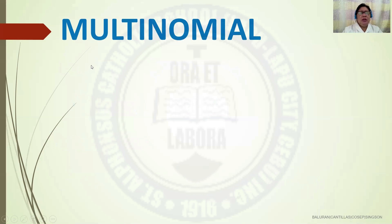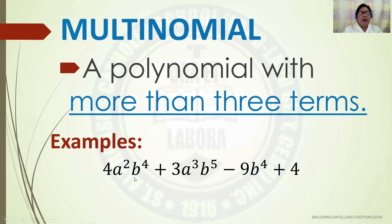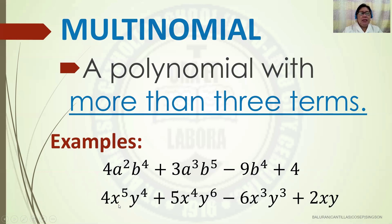Another classification is called multinomial. It is a polynomial with more than three terms. Examples: 4a squared b raised to exponent 4 plus 3a cubed b raised to exponent 5 minus 9b raised to exponent 4 plus 4 — counting the terms: 1, 2, 3, 4 — so it is a multinomial. Another example: 4x exponent 5 y exponent 4 plus 5x raised to exponent 4 y raised to exponent 6 minus 6x cubed y cubed plus 2xy — this is also a multinomial.